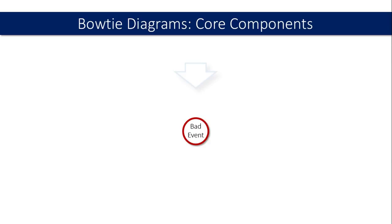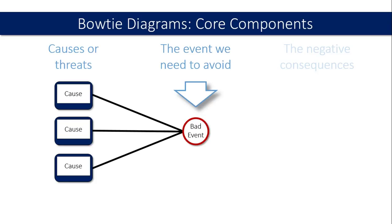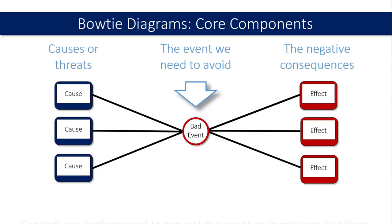In principle, at the centre of your model, you would have what I call a bad event — because I like to use very simple language. In the engineering community it's sometimes called the loss of control moment, but in principle it's just the thing that you don't want to happen. On the left-hand side of that diagram, you would have either causes or threats — I prefer to stick to 'cause'. And on the right-hand side of your diagram, you would have the effects, which, because it's a bad event, there would be negative consequences, typically. So we have a standard cause and effect diagram there.